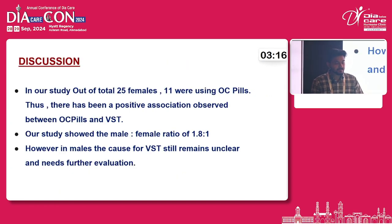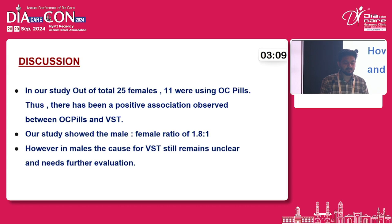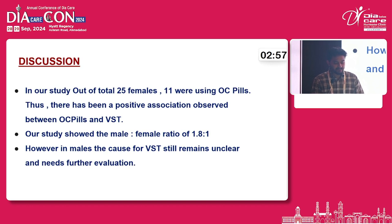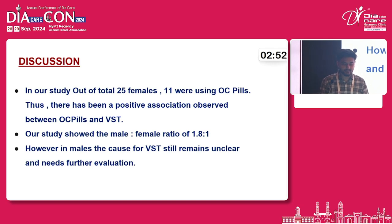In our study's discussion, out of 25 females, 11 patients were using oral contraceptive pills. Thus, there is a positive association between oral contraceptive pills and venous sinus thrombosis. The study showed a male to female ratio of 1.8 to 1. However, the cause of venous sinus thrombosis in males remains unclear and needs further evaluation.